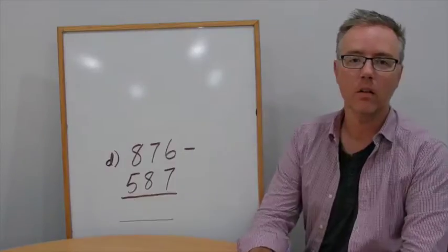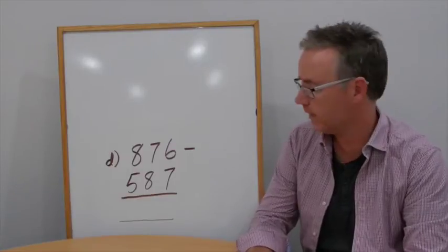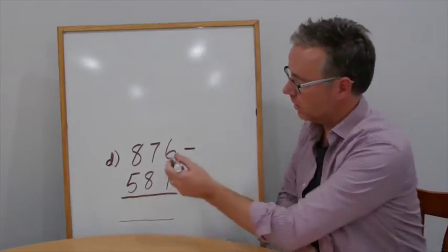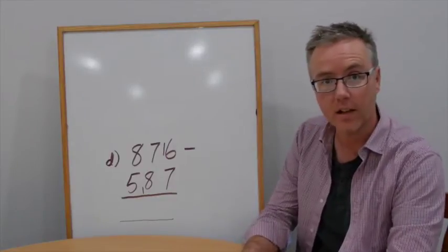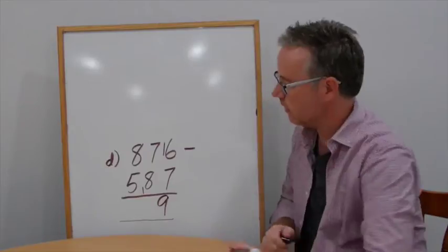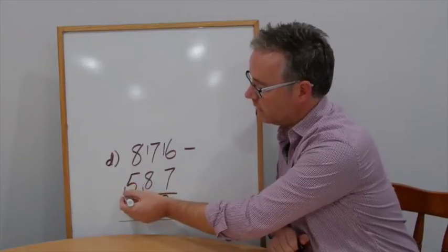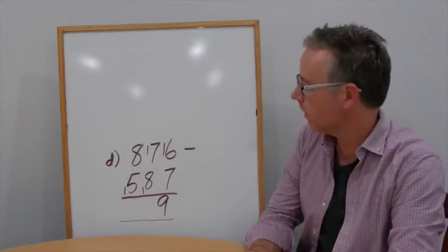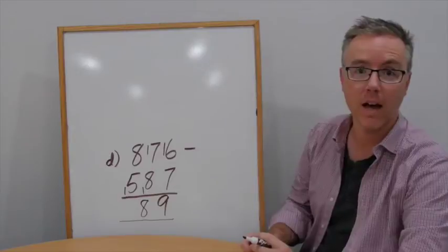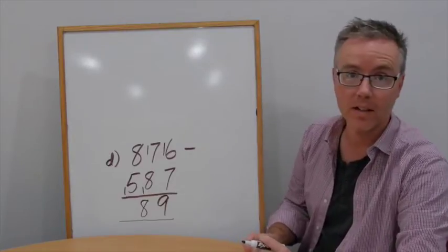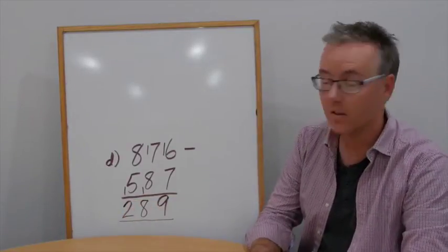Check your estimate now. Question D: 876 take away 587. 6 take away 7, can't do. Add 10, add 10 at the bottom to take that away. 16 take away 7 is 9. 7 take away 9, can't do. Add 10, add 10 down the bottom. 17 take away 9 is 8. 8 take away 6 is 2. Answer: 289.